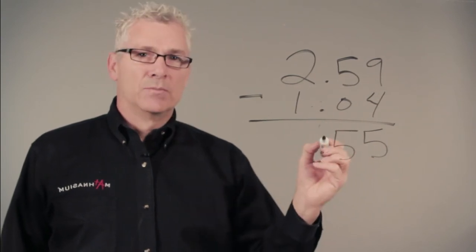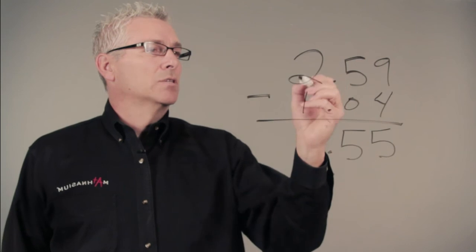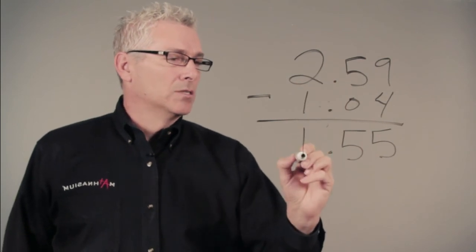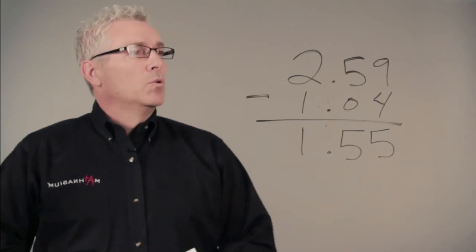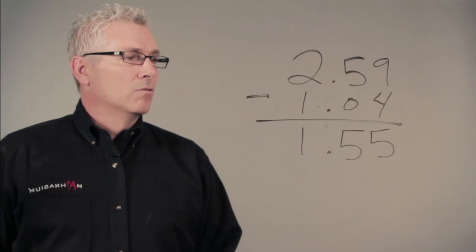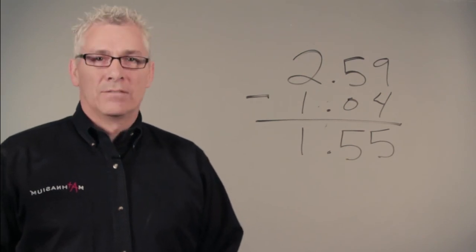We bring down our decimal to the exact spot where it started and we subtract 1 from 2 getting 1. So our answer to 2.59 minus 1.04 is 1.55.